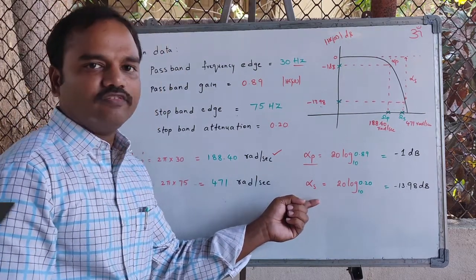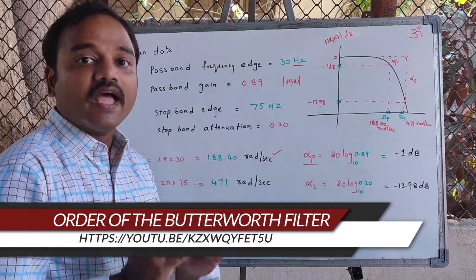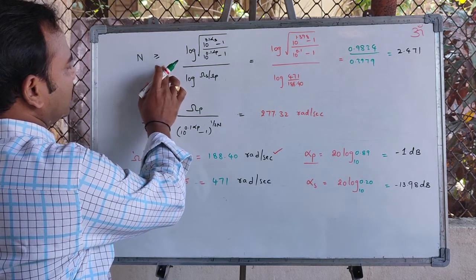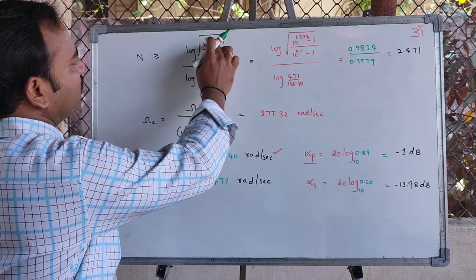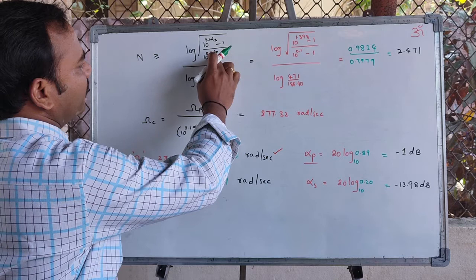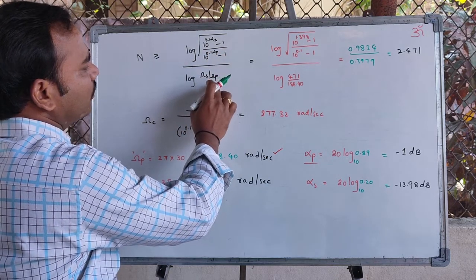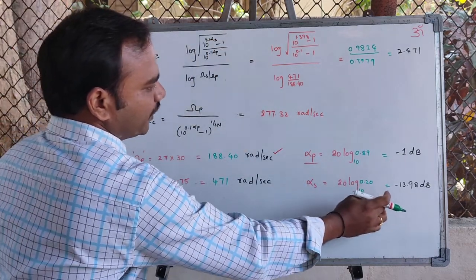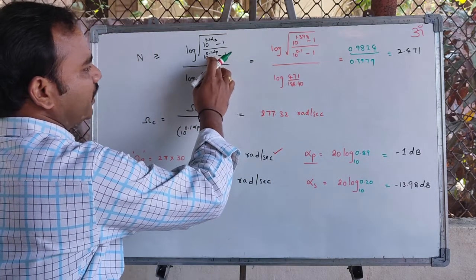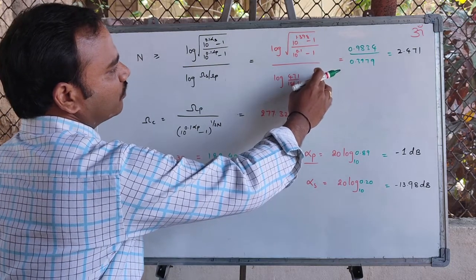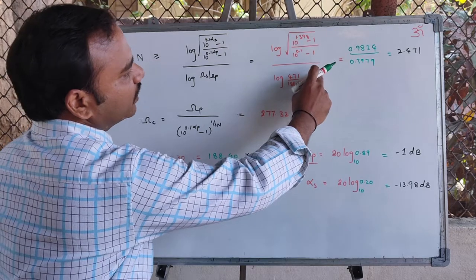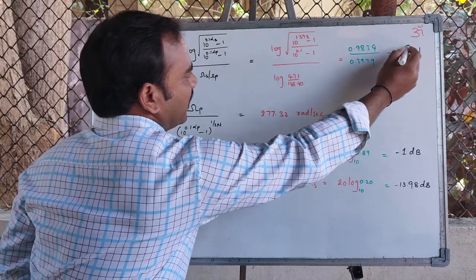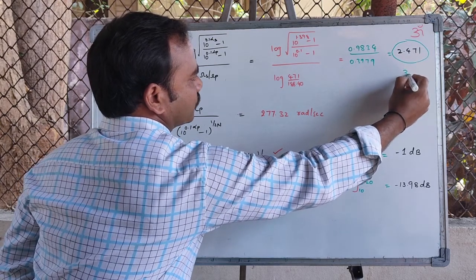With these values we will find the order n of the Butterworth filter and its cutoff frequency. The order n is given by n ≥ log(√((10^(0.1·α_S) − 1)/(10^(0.1·α_P) − 1))) / log(Ω_S/Ω_P). Substituting α_S = 13.98 dB and α_P = 1 dB, we get 0.9834 / 0.3979 = 2.47, which rounds up to the next higher integer, giving n = 3.